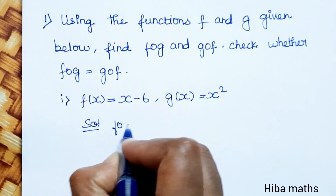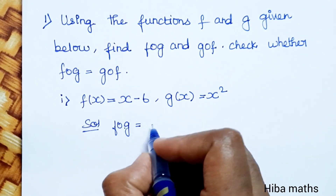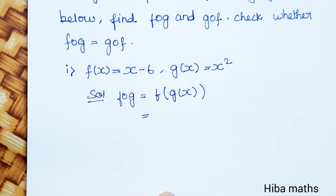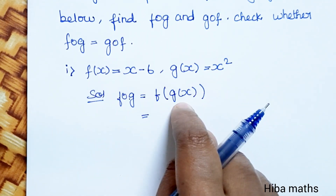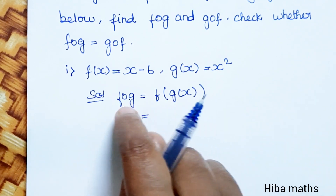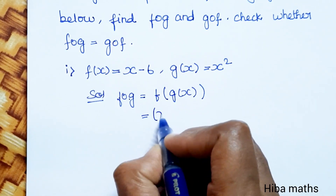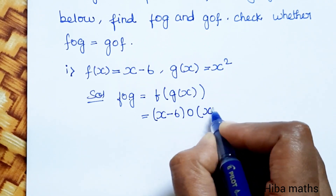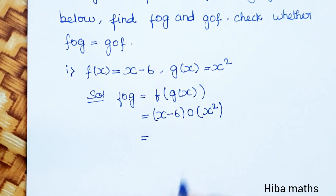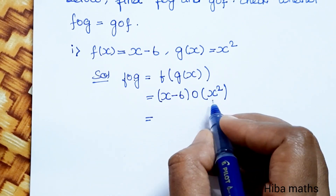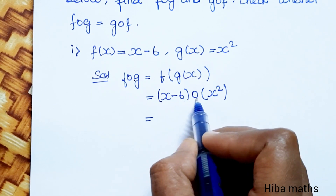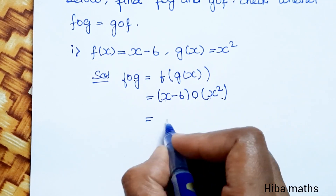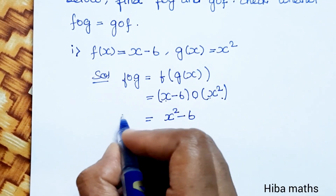Solution: First we find f of g. f inside g comes — write f, open bracket, put g of x inside. In f, wherever x appears, substitute g of x. So f of g: x is replaced by x square, giving x square minus 6. This is f of g — that is the first result.